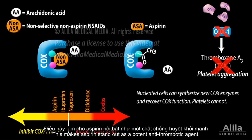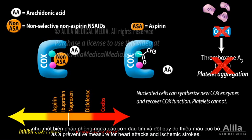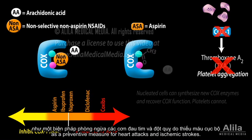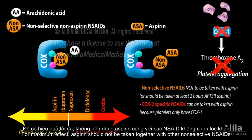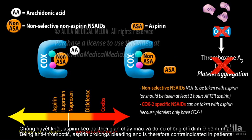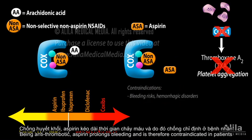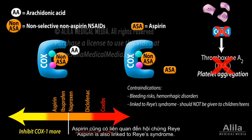This makes aspirin stand out as a potent antithrombotic agent. Aspirin is commonly prescribed to reduce risk of blood clot formation as a preventative measure for heart attacks and ischemic strokes. For maximum effect, aspirin should not be taken together with other non-selective NSAIDs, as these will compete with aspirin for a common binding site on the platelet's COX1. Being antithrombotic, aspirin prolongs bleeding and is therefore contraindicated in patients with bleeding risks or hemorrhagic disorders.